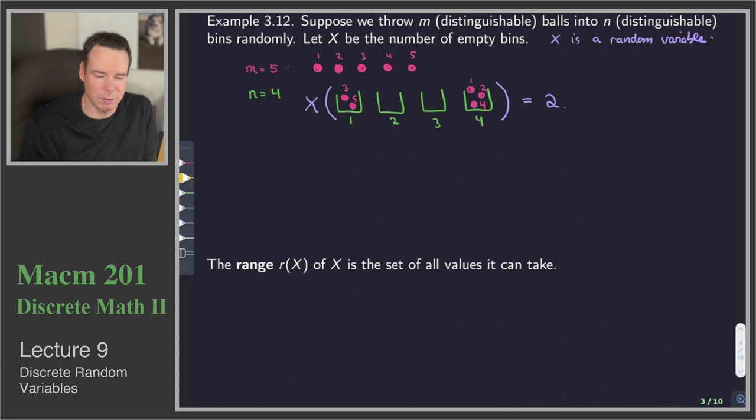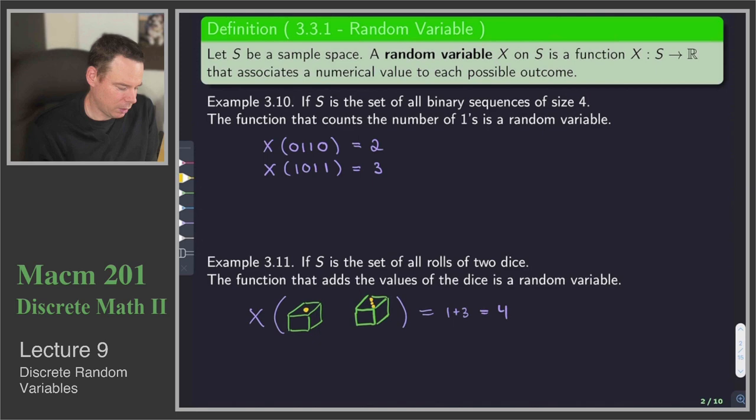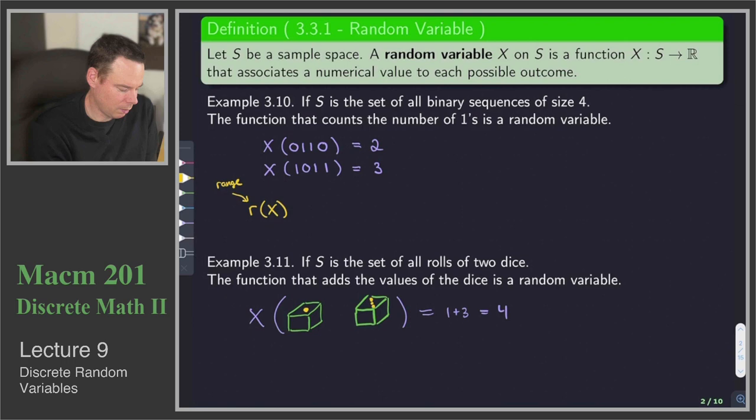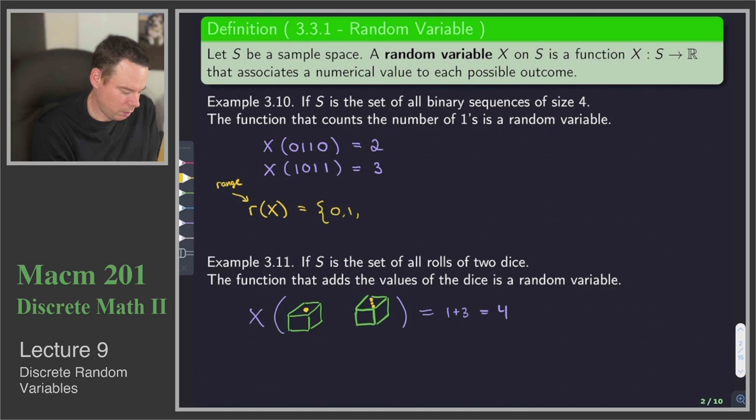For a random variable, because it's a function, we can talk about its range — the set of all values it takes on. Going back to our previous examples: what is the range of the random variable x that counts ones in a sequence of length 4? Well, this counts the number of ones in a sequence of length 4, so there could be 0, 1, 2, 3, or 4 ones.